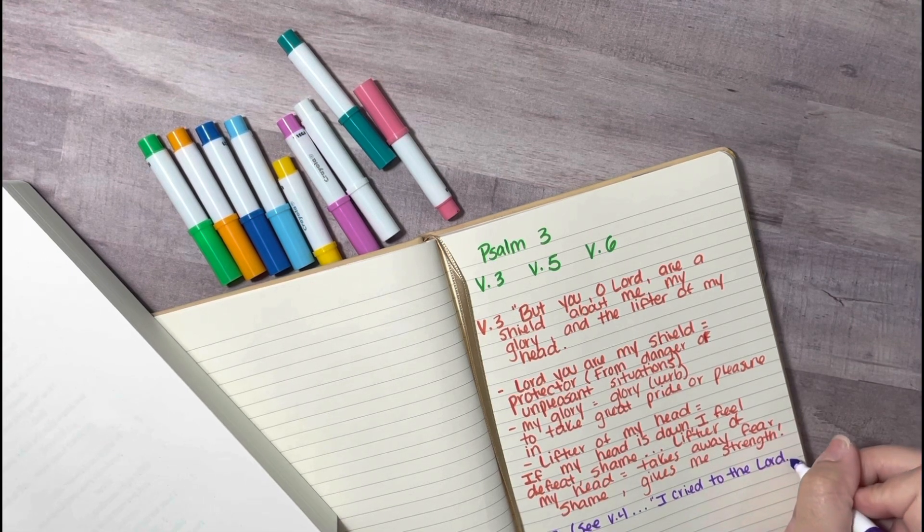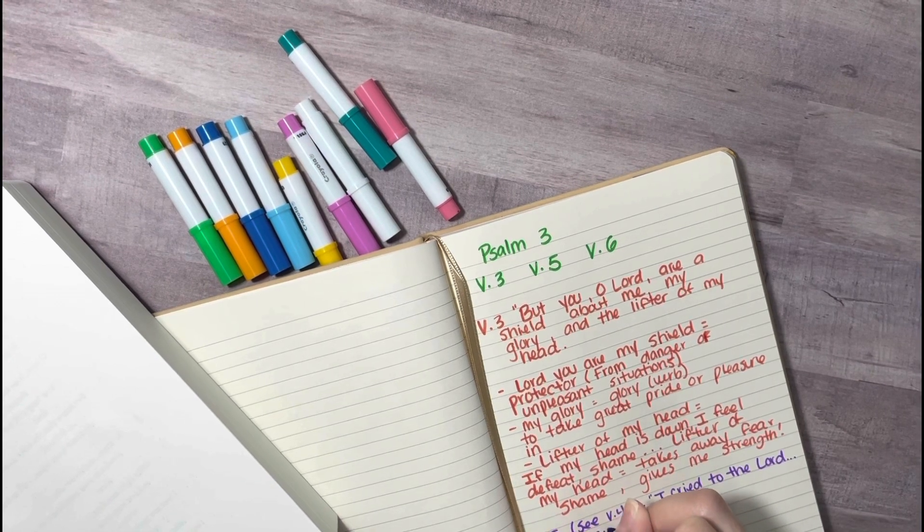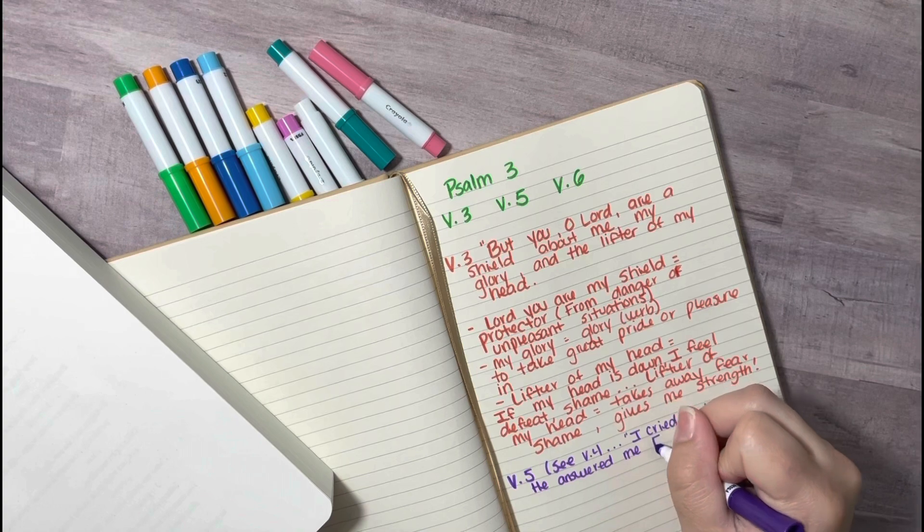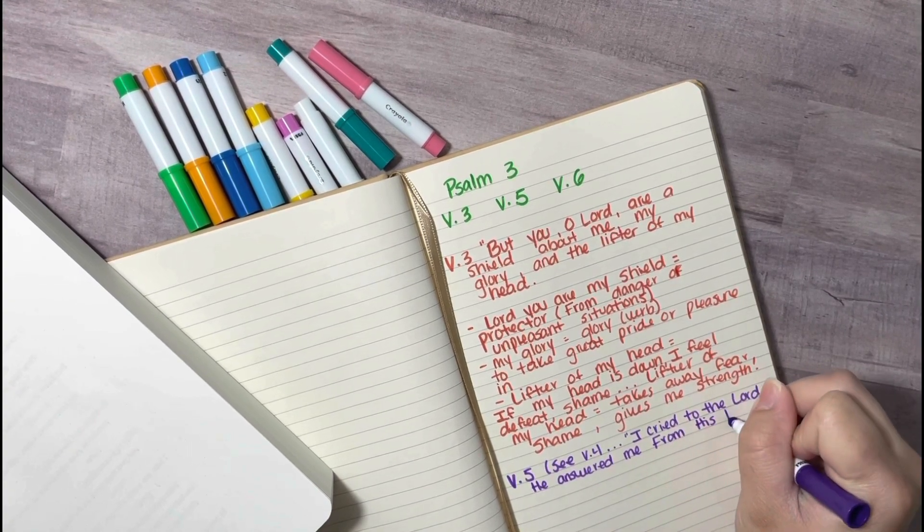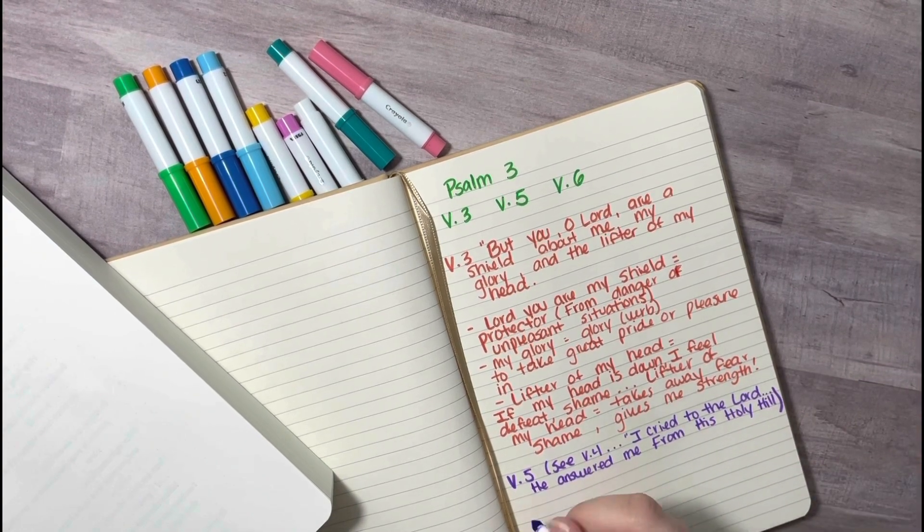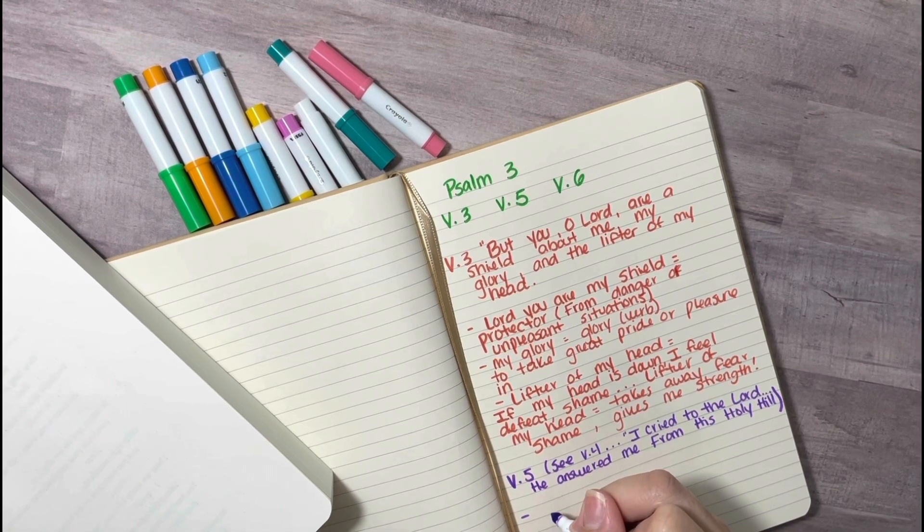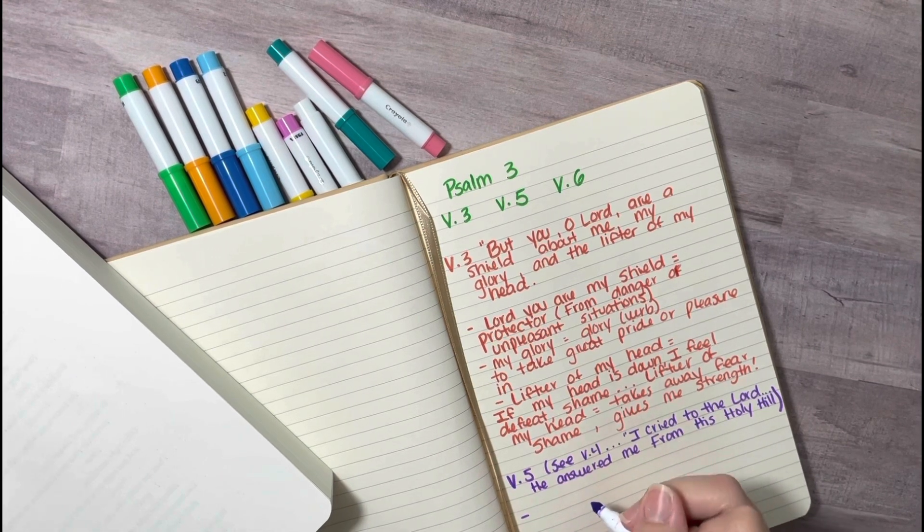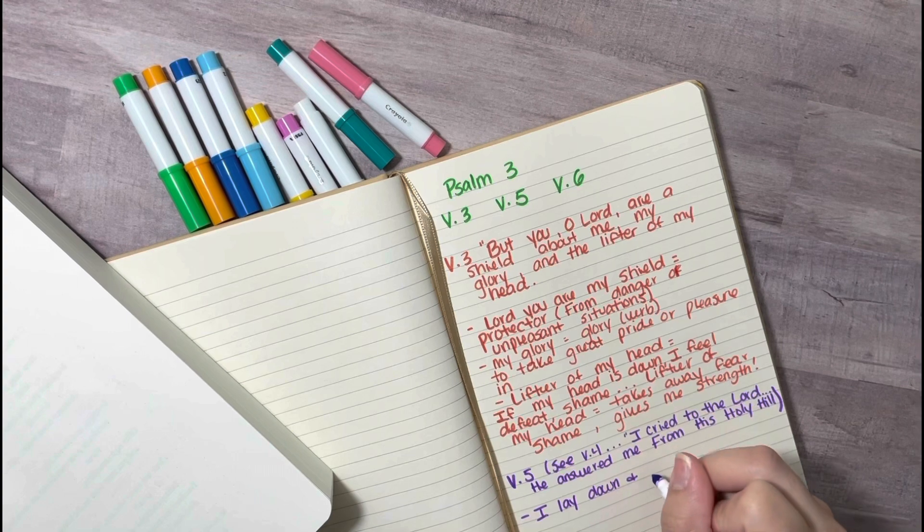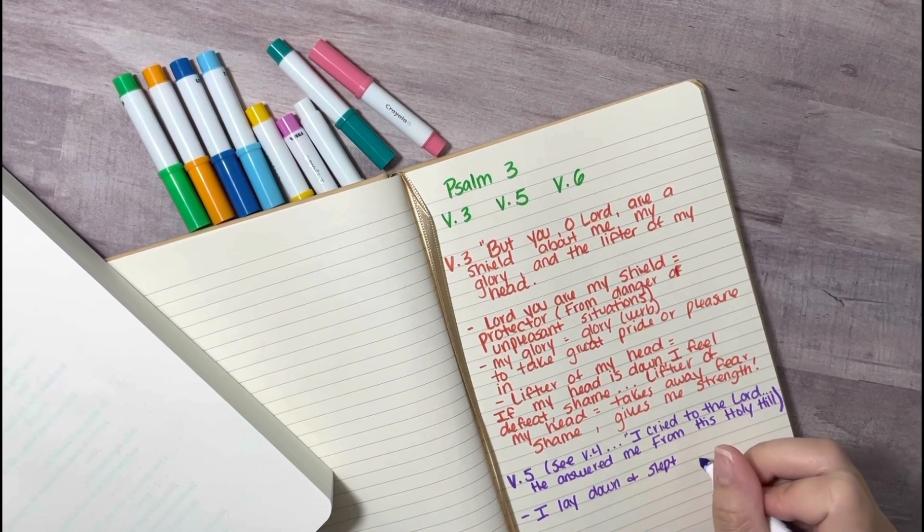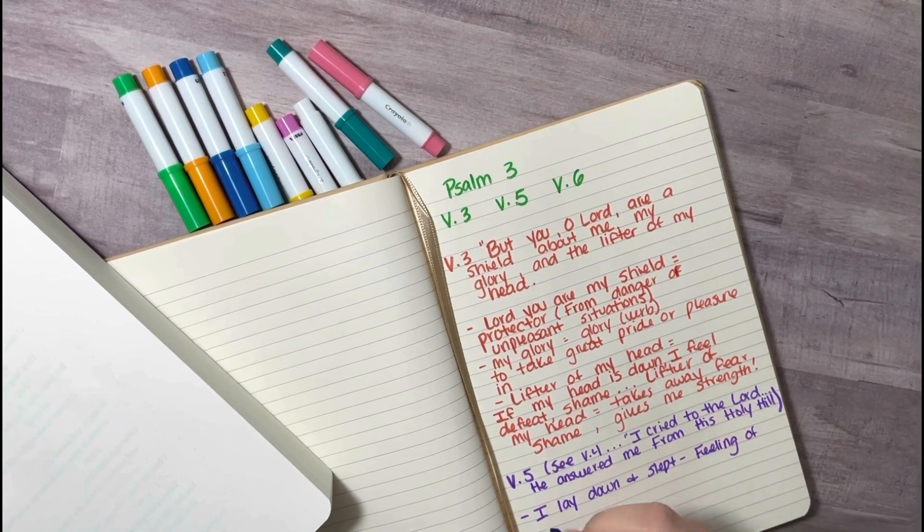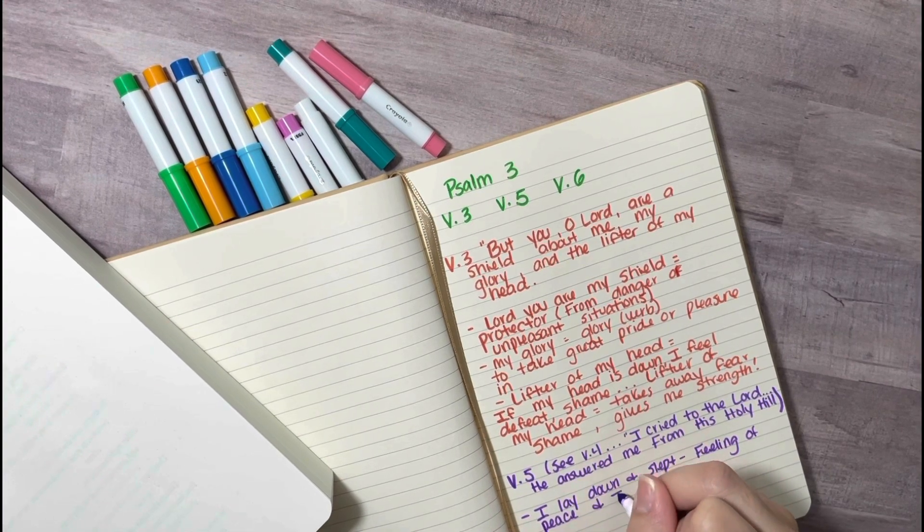So I made a little note here because I found that reading verse four kind of helped me with verse five, the verse before that. It says, I cried aloud to the Lord and he answered me from his holy hill. I laid down and slept. I woke again for the Lord sustained me. So I laid down and slept, feeling peace and trust in the Lord. And if we look at the verse before, like I said, it says that I cried out to the Lord and he answered me from his holy hill. So that is why I can fall asleep feeling peace and trust in the Lord. That even though I am resting, God never rests. So even when I can't see him, he's still working in my favor and I can trust in that. And I also can feel peace and knowing that he is still working in my favor.